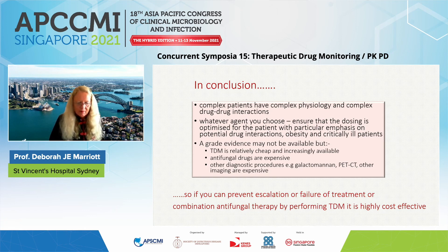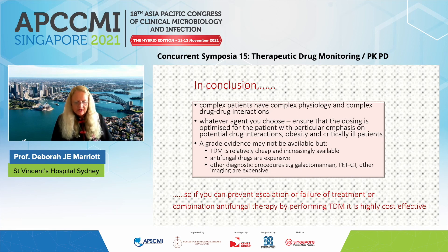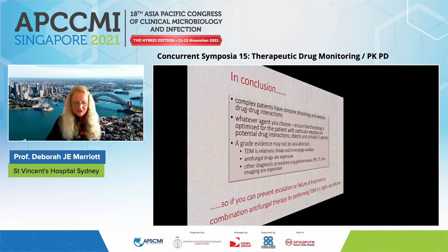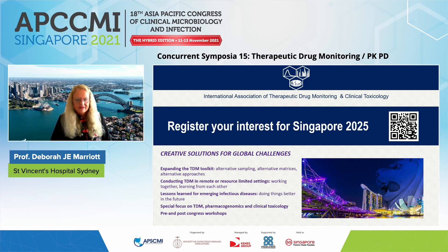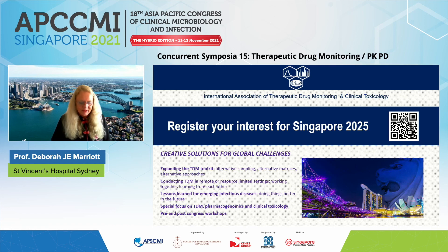In conclusion, complex patients have very complex physiology and often unexpected drug interactions. Whatever drug you choose, ensure dosing is optimized for the patient with particular emphasis on potential drug interactions, obesity and critically ill patients. Grade A evidence may not be available, but TDM is relatively cheap and increasingly available. Antifungal drugs are expensive, as are diagnostics such as galactomannan, PET-CT and other imaging — so preventing treatment escalation or failure through TDM is highly cost-effective. Finally, Australia has successfully bid with colleagues in Asia and the Pacific to hold the International Association for Therapeutic Drug Monitoring and Clinical Toxicology meeting in Singapore — and I hope today's session will inspire many of you to become passionate about TDM and join us there. Thank you very much.